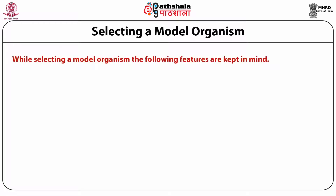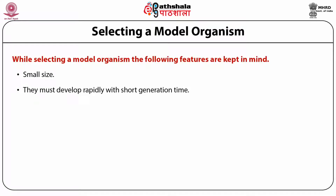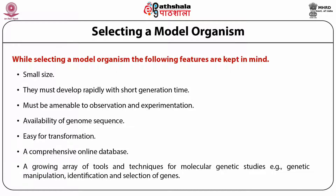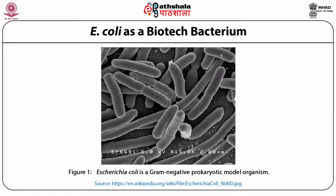When selecting a model organism, the following features are kept in mind: small size, rapid development with short generation time, amenability to observation and experimentation, availability of genome sequence, ease of transformation, a comprehensive online database, and a growing array of tools and techniques for molecular genetic studies such as genetic manipulation and identification and selection of genes.